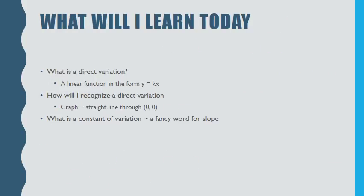So hopefully today you learned that direct variation is a linear function in the form y equals kx. How you can recognize a direct variation. Remember our graph, we're going to have a straight line through (0, 0). And we want to know what the constant of variation is, which is a fancy word for slope. Have a math-tastic day.